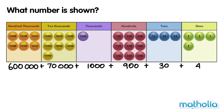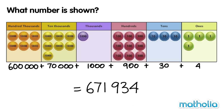600,000 plus 70,000 plus 1,000 plus 900 plus 30 plus 4 equals 671,934. The number shown is 671,934.